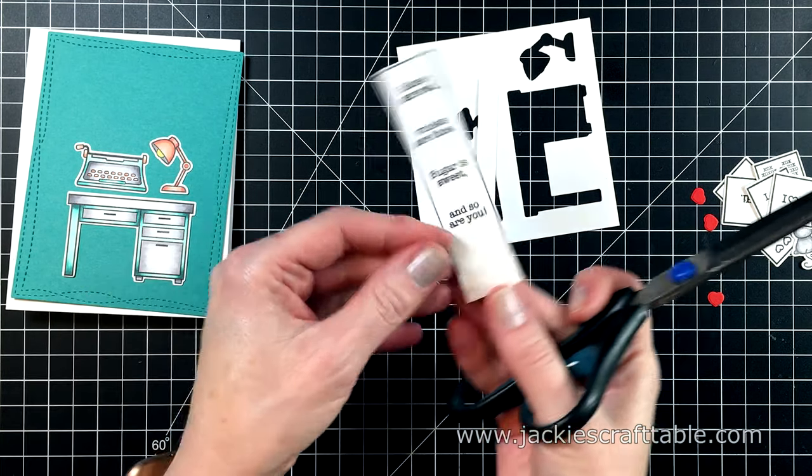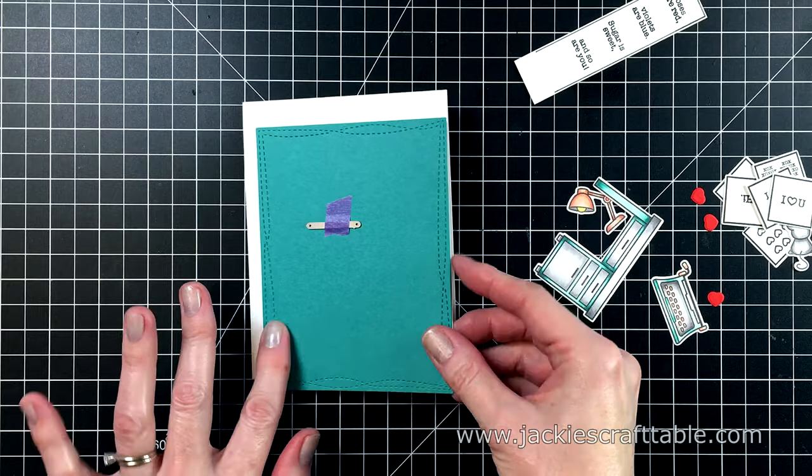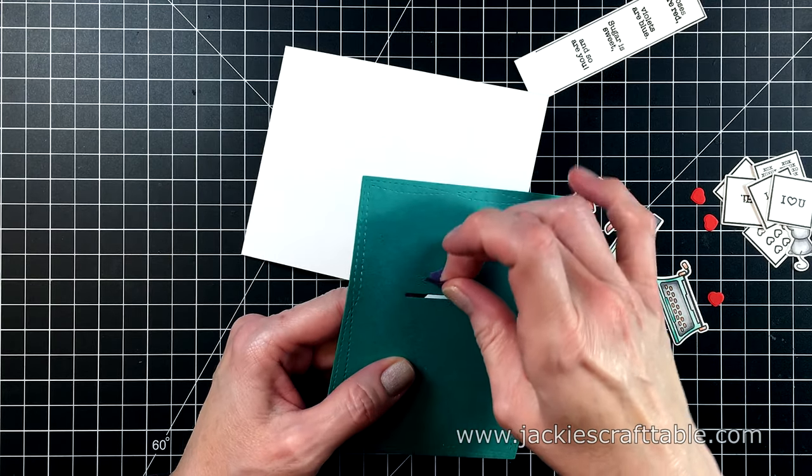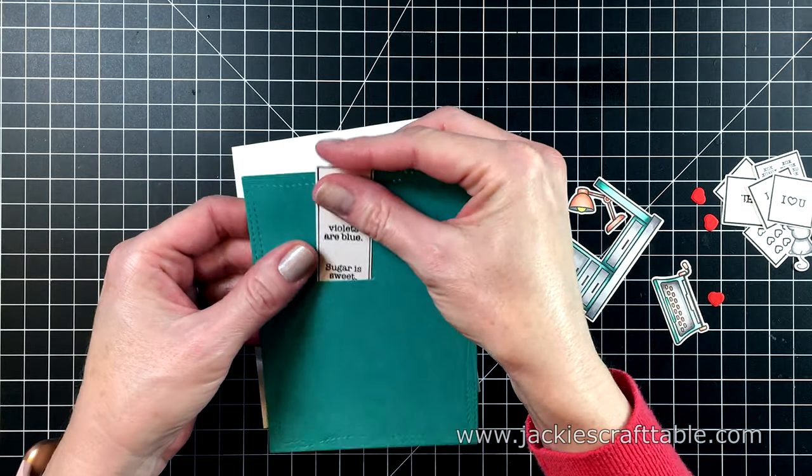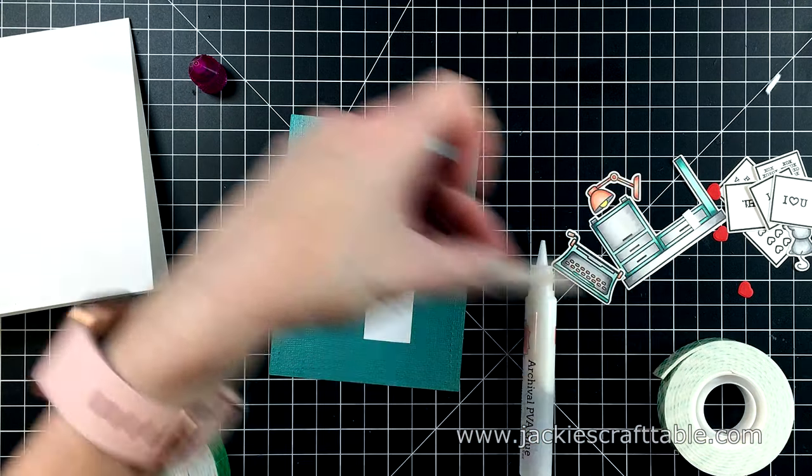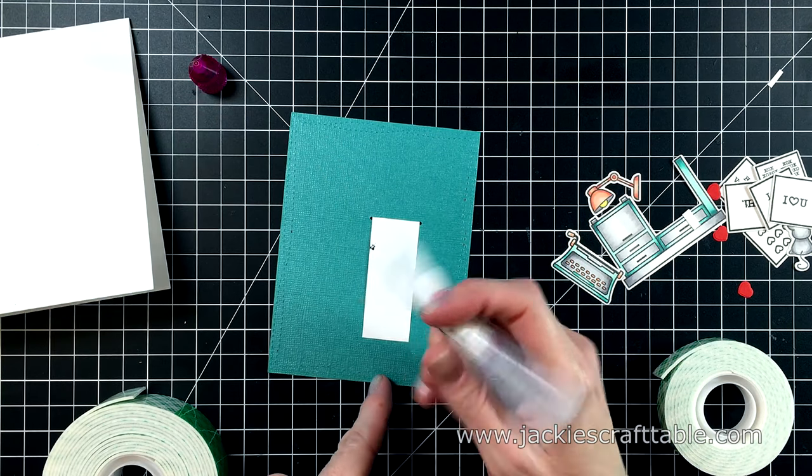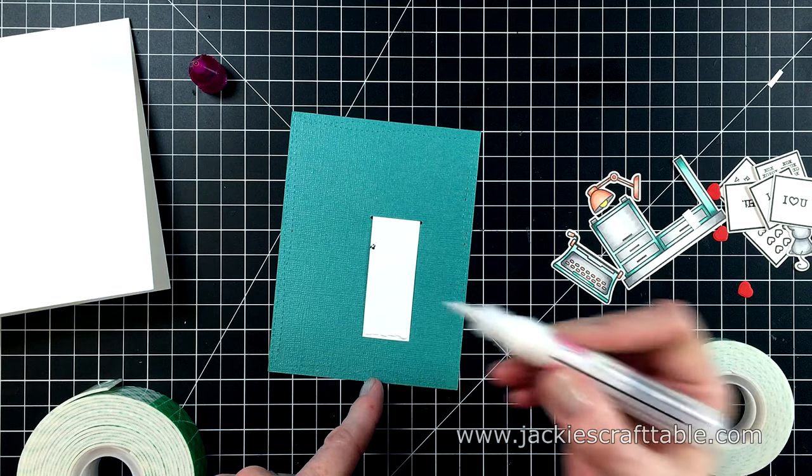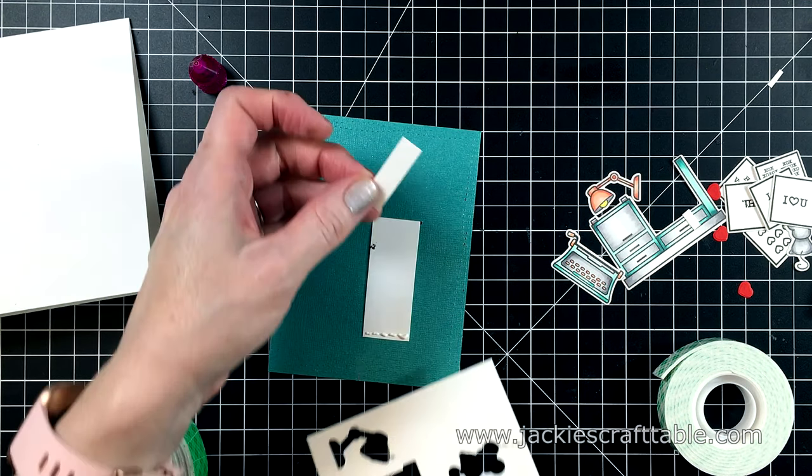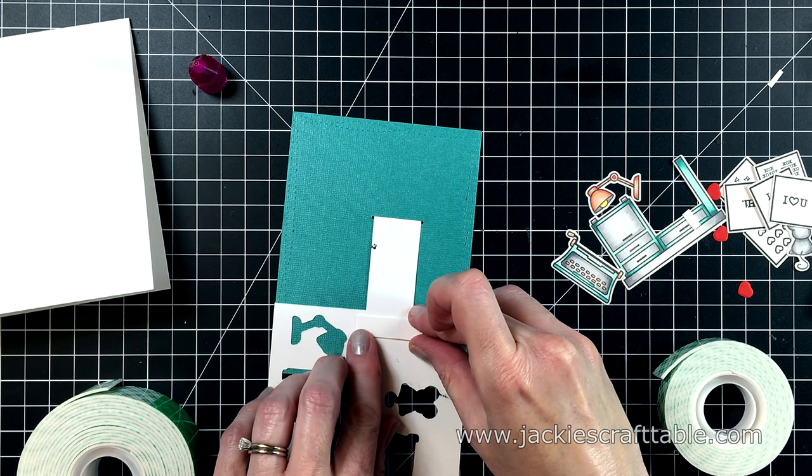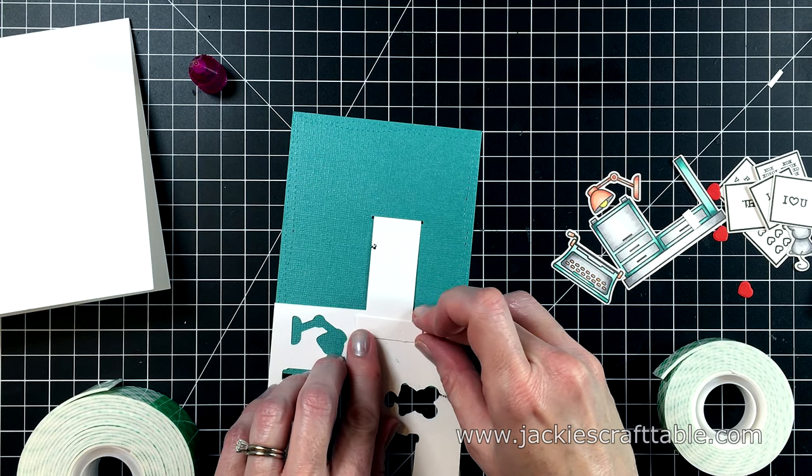So this kit includes a little teeny die that you see there, and it cuts out a slot where you can put your paper. And see that—just fits perfectly inside. And now I'm going to flip it over and I'm going to put a stopper at the edge of this paper so that you can't pull the poem completely out of the card. I'm just putting a piece of scrap paper underneath so I don't accidentally glue it to my teal paper.